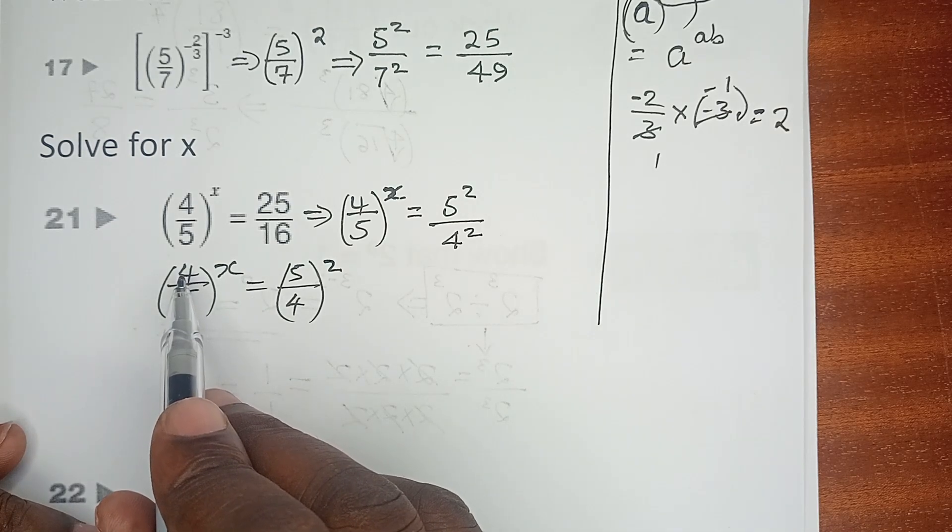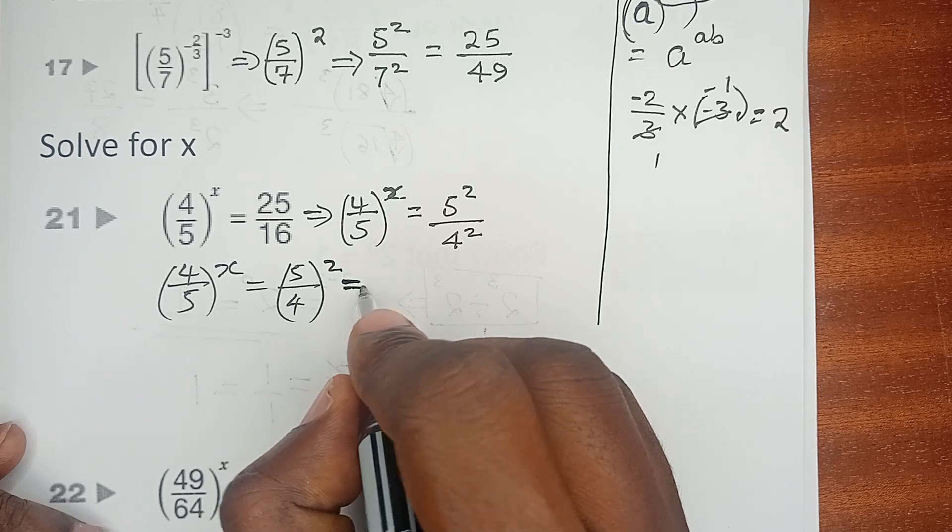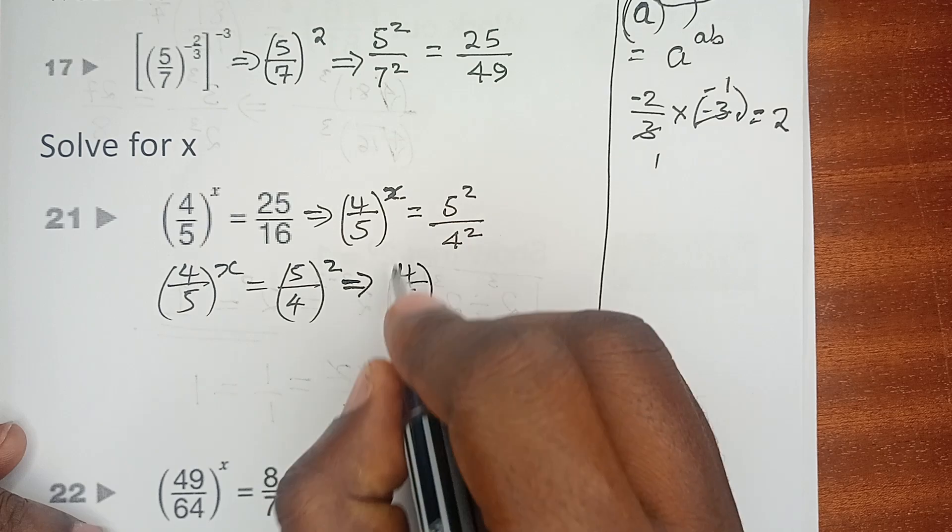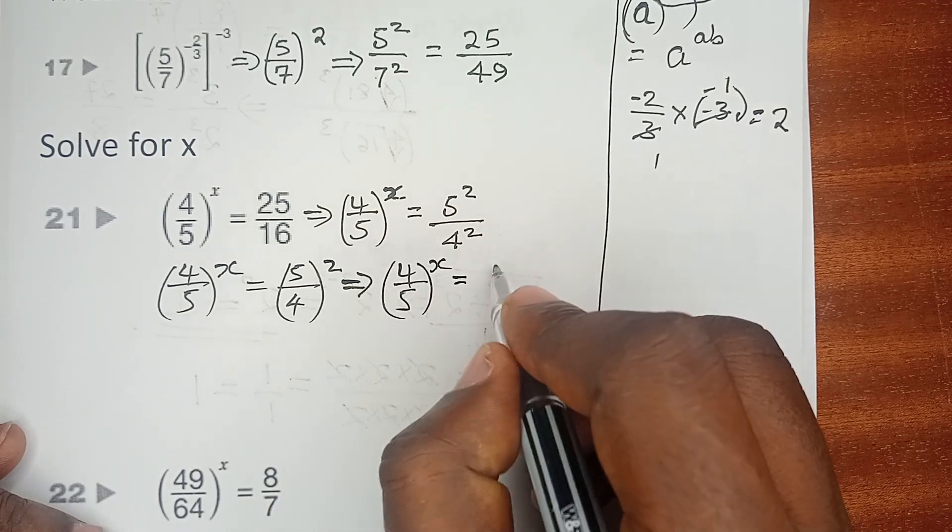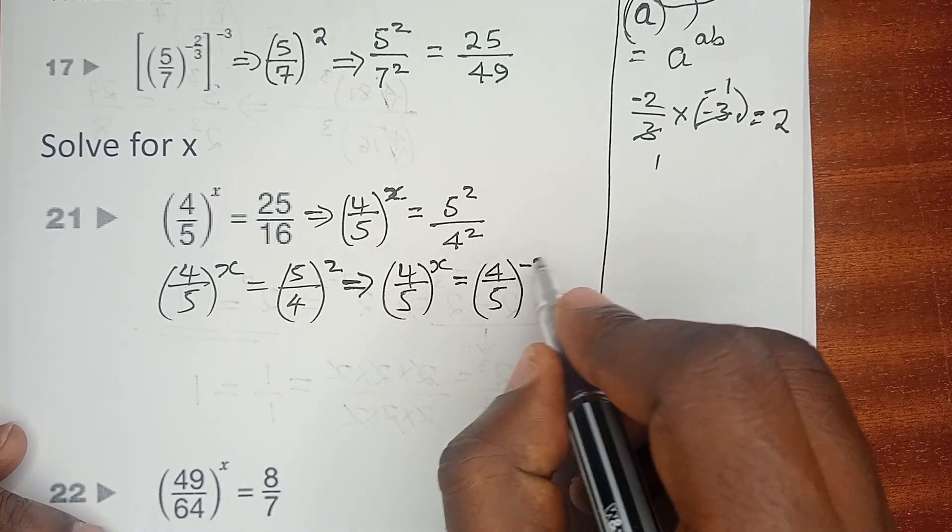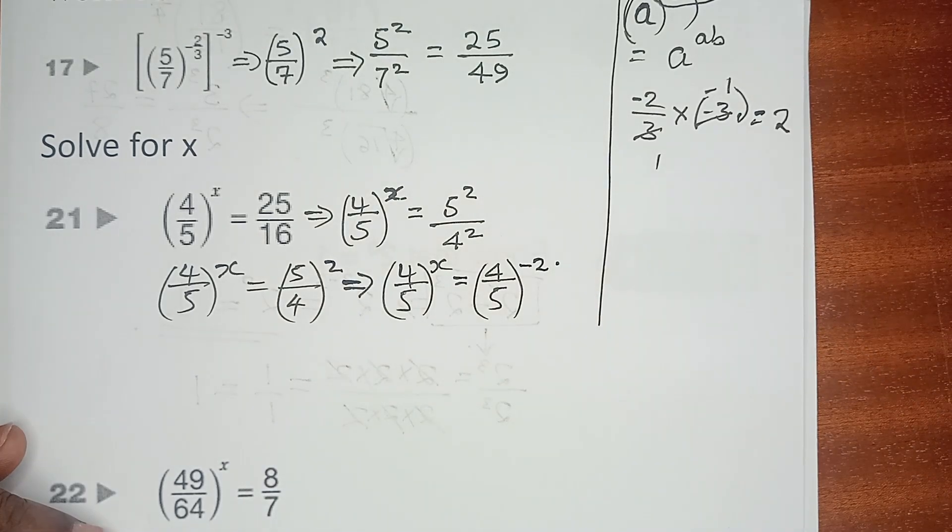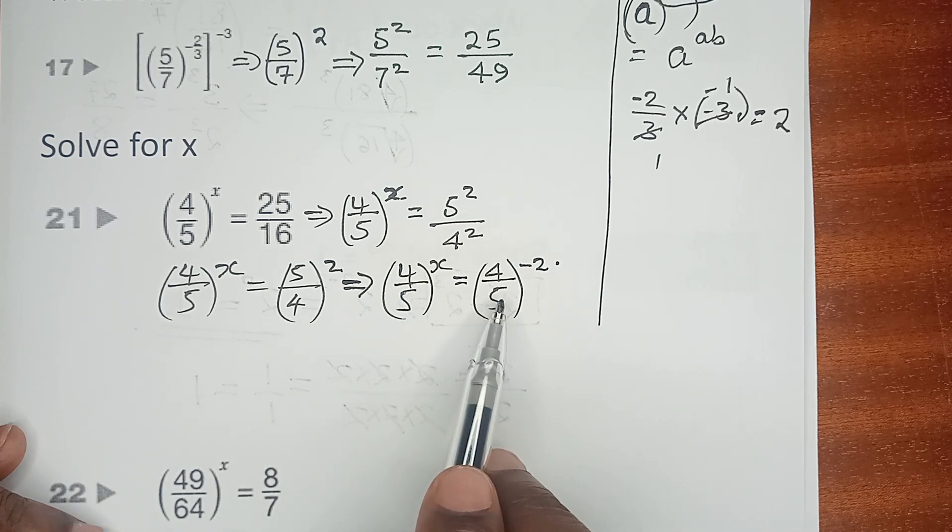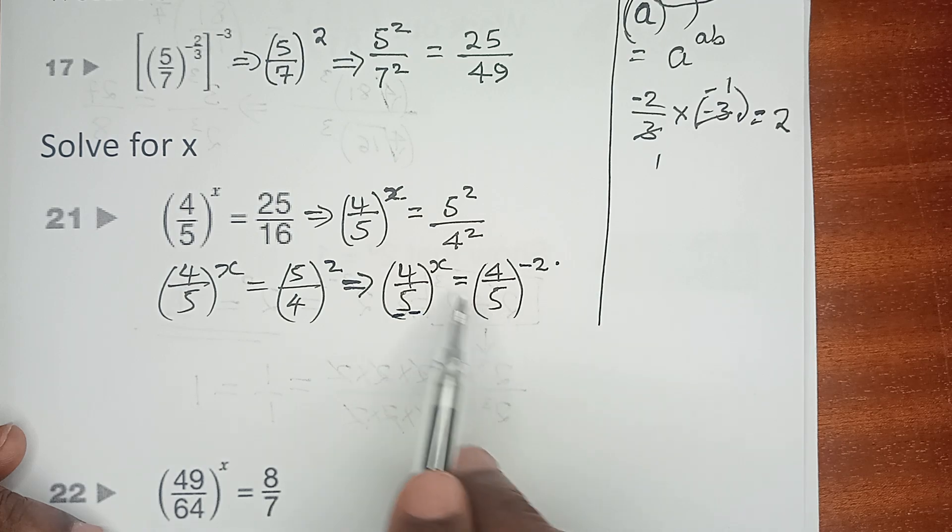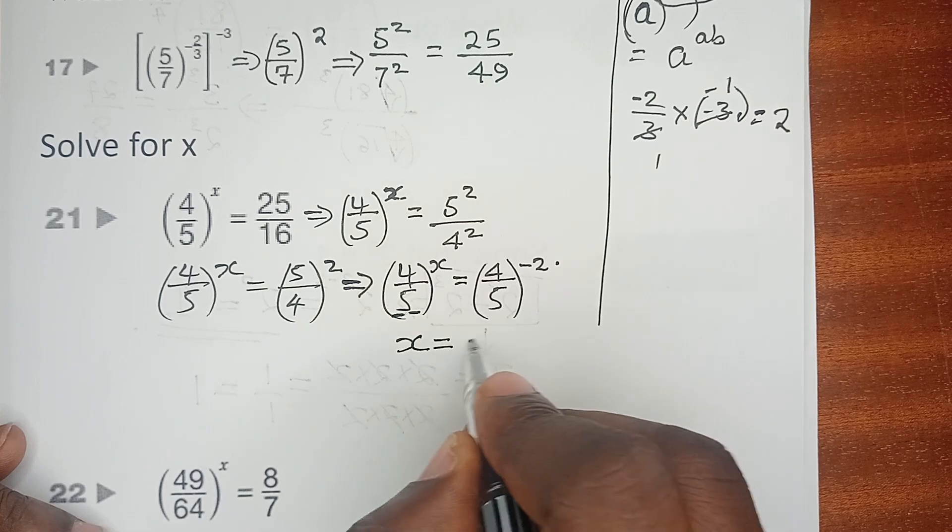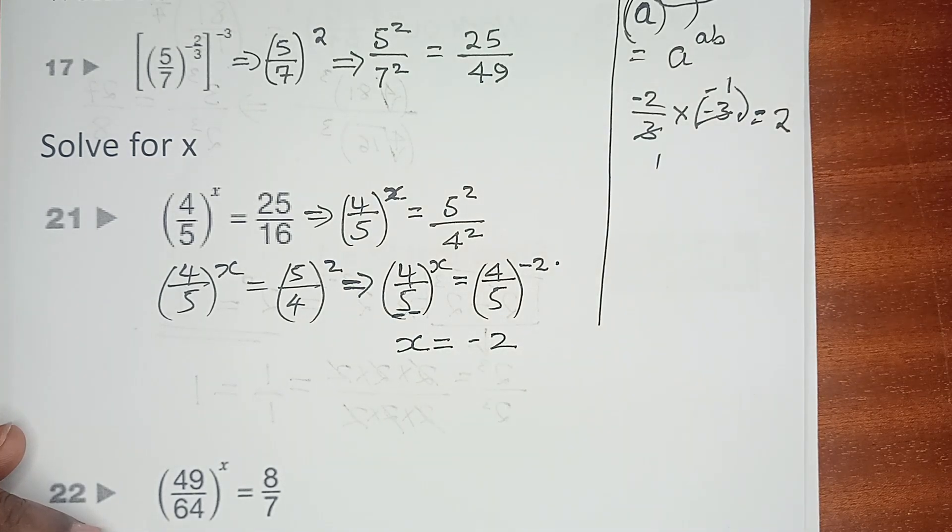The numerator will be agreeing with the numerator, and the denominator with the denominator. So we have (4/5)^X equals (4/5)^-2. The left-hand side equals the right-hand side, and the bases are similar, therefore the indices must also be equal. So X equals -2.